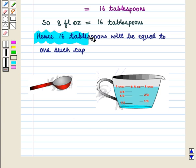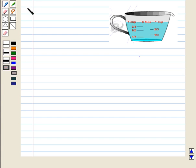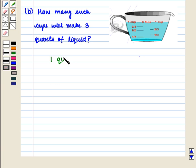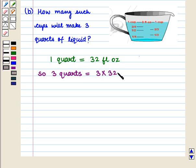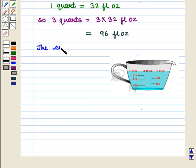Hence we can say that 16 tablespoons will be equal to 1 such cup. Now we move on to Part B of the question. We have to find how many such cups will make 3 quarts of liquid. We know that 1 quart is equal to 32 fluid ounces, so 3 quarts will be equal to 3 into 32 fluid ounces, that is equal to 96 fluid ounces. Now we know that the cup measures 8 fluid ounces.